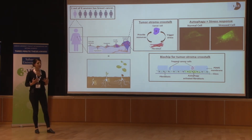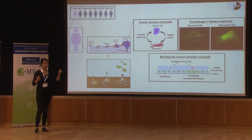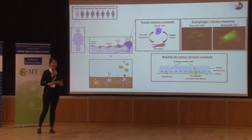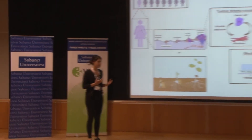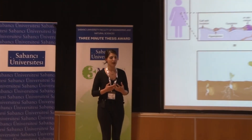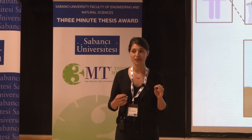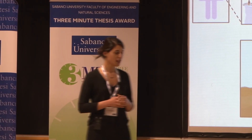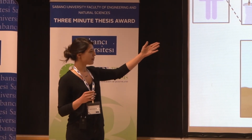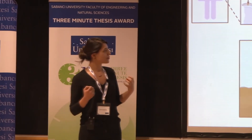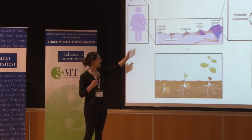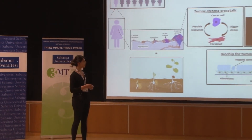My PhD thesis is to mimic this environment outside of the body. We wanted to create tumors and their communication outside of the body to understand how cancer is progressing — how cancer cells are communicating with the environment. They are essentially making the environment work like a slave for them. While cancer cells are talking with fibroblast cells, asking for food, it creates a stress, making green dots in the cell. We call it autophagy. And these stressed cells provide nutrients for cancer cells.